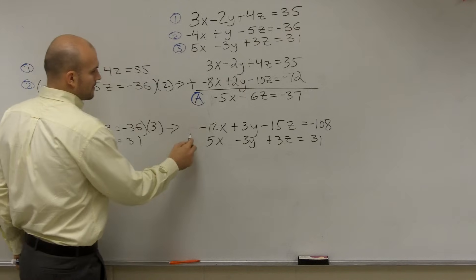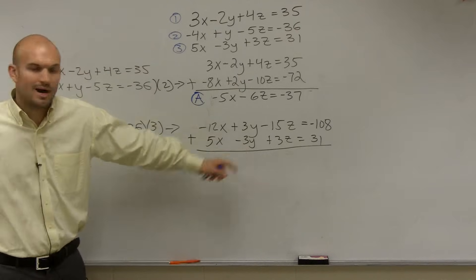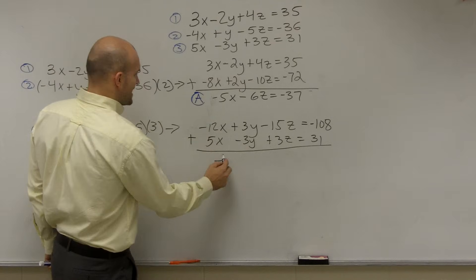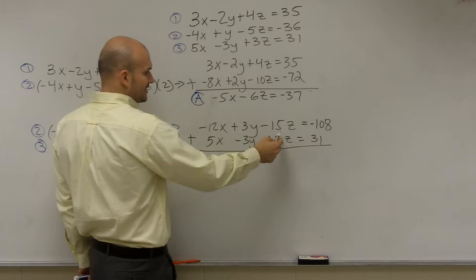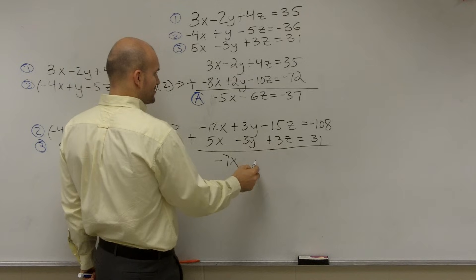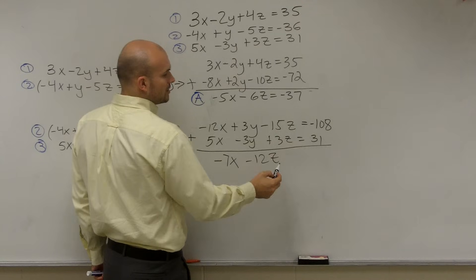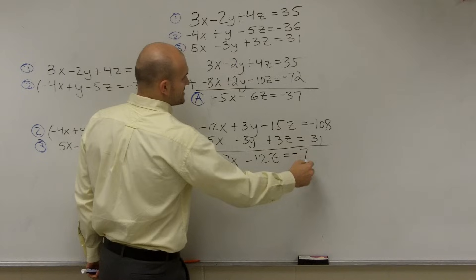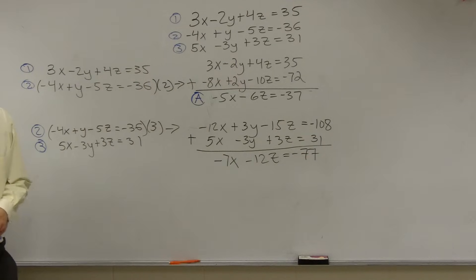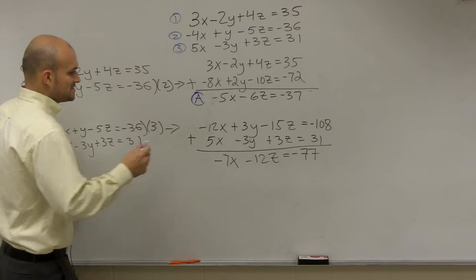Now I add those two equations to eliminate y again. I get negative 7x, 3y minus 3y is 0, and negative 15z plus negative 12z... wait, negative 15z plus 3z is negative 12z, and negative 108 plus 31 is negative 77. So I label this Equation B: negative 7x minus 12z equals negative 77.